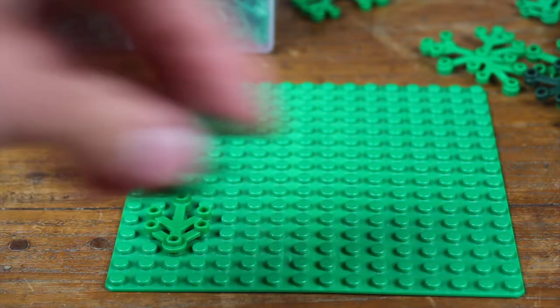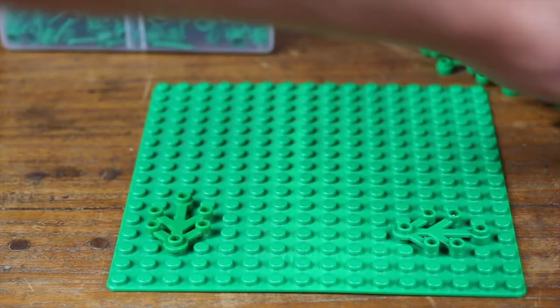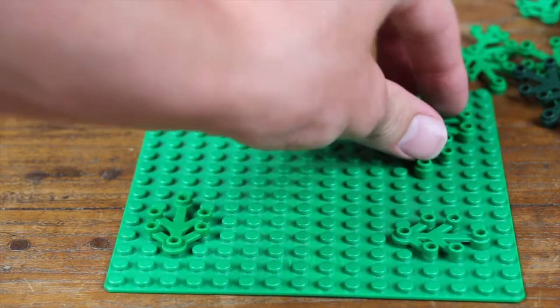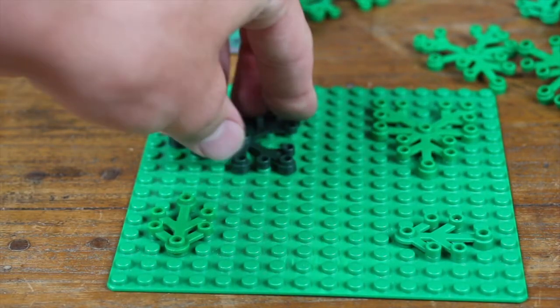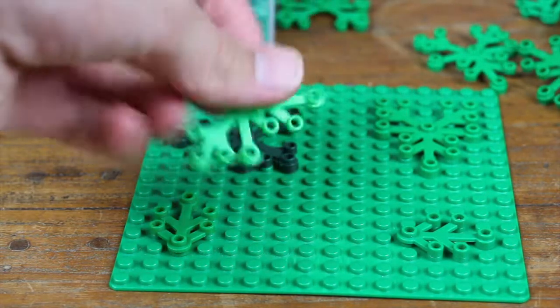First off, you just want to start placing the smaller size of the Lego leaf just a little bit around, and then you want to start placing the bigger size. Once you got that, you don't want to make it too crowded.